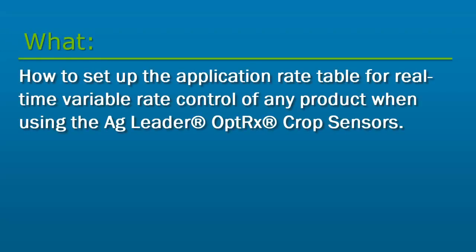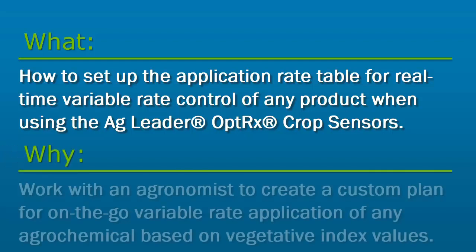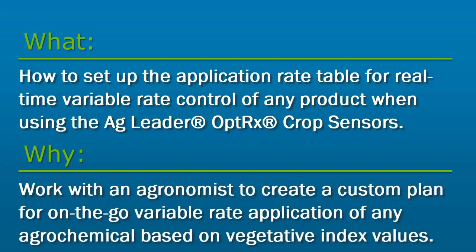In this video, we will cover how to set up the application rate table for real-time variable rate control of any product when using the AgLeader Optrix Crop Sensor on the NCommand 1200 display. The Optrix Crop Sensor has built-in settings for nitrogen application, but it is also ideal for on-the-go variable rate application of other products, such as fertilizers, pesticides, defoliants, growth regulators, or other agrochemicals.